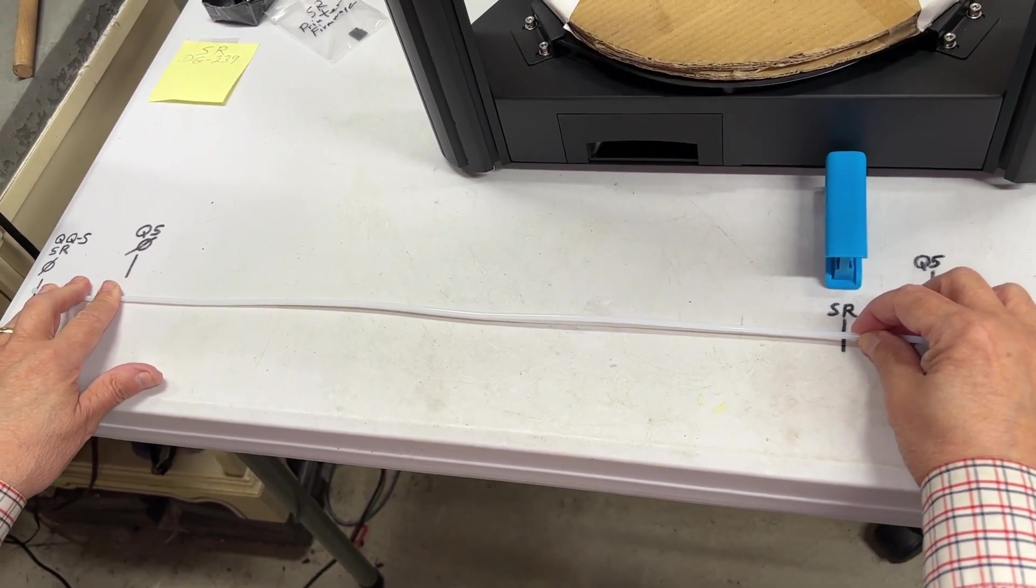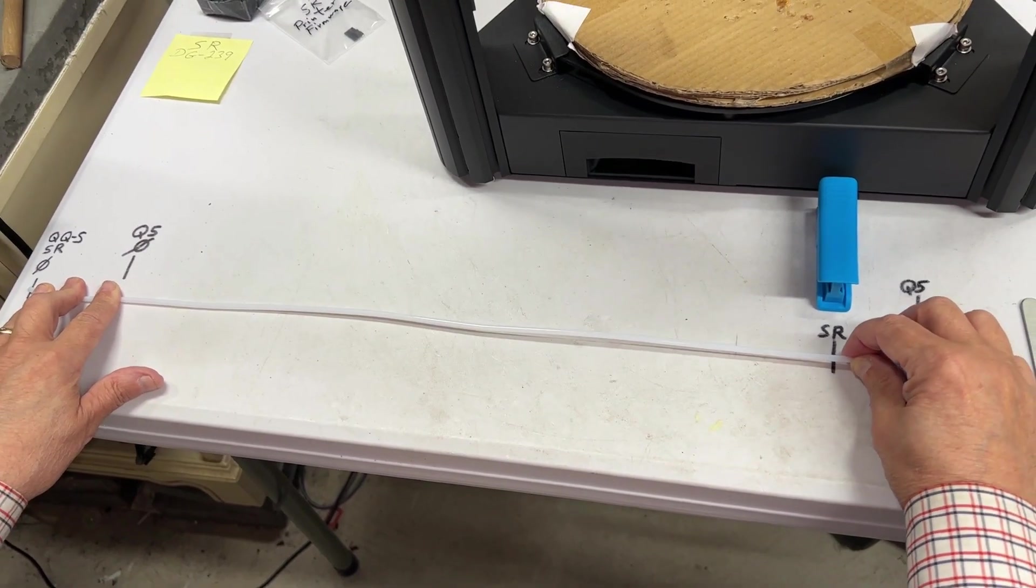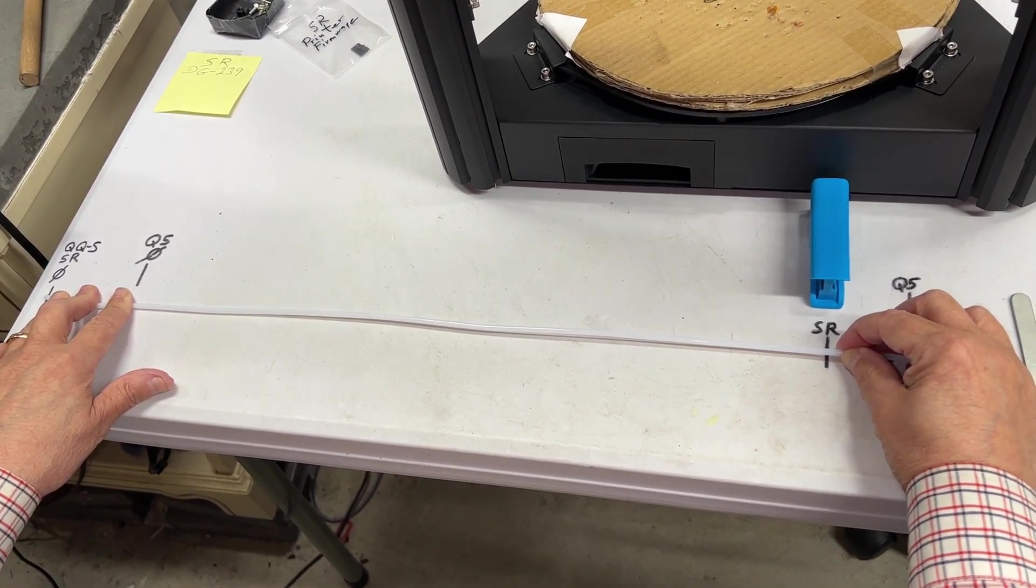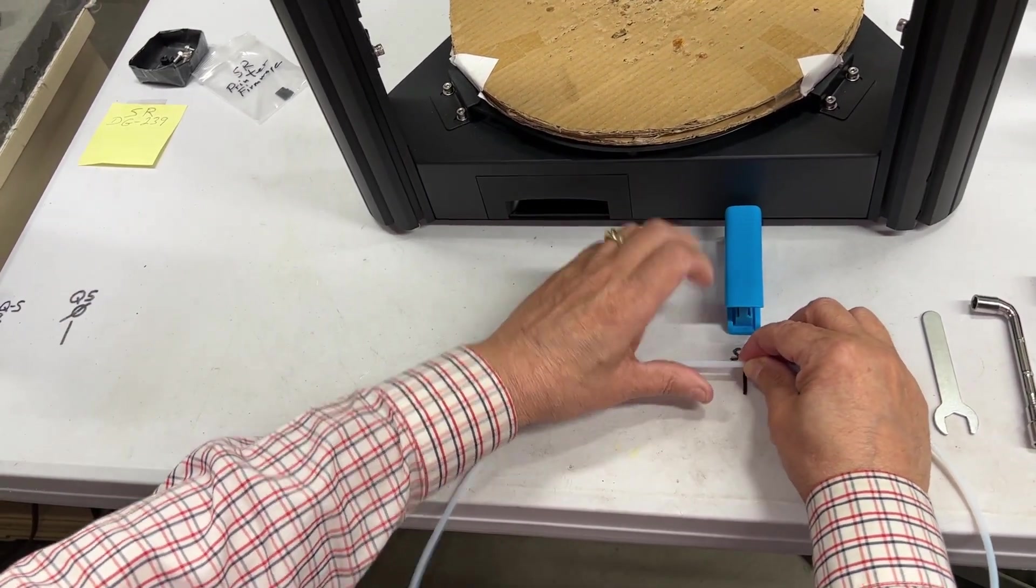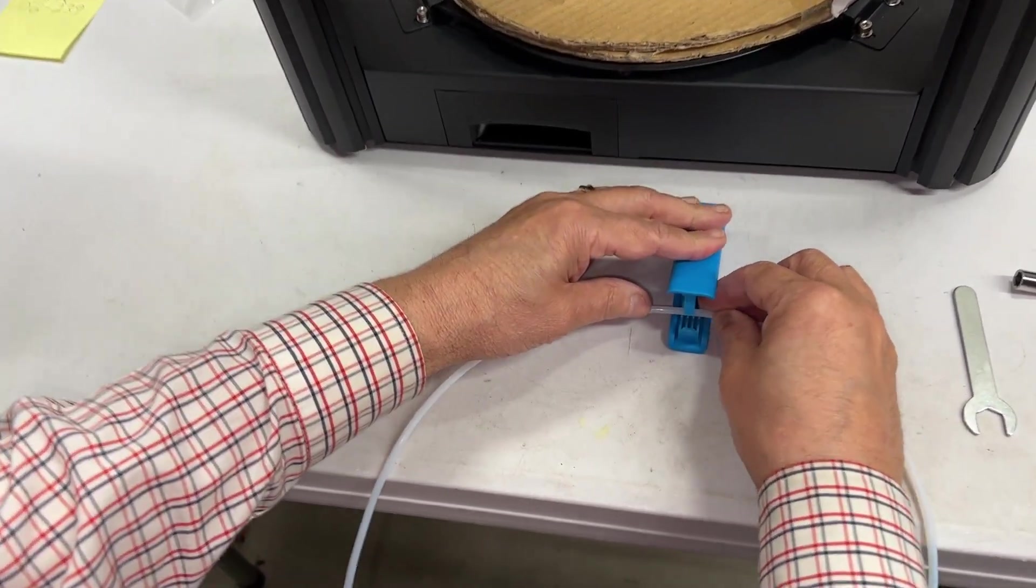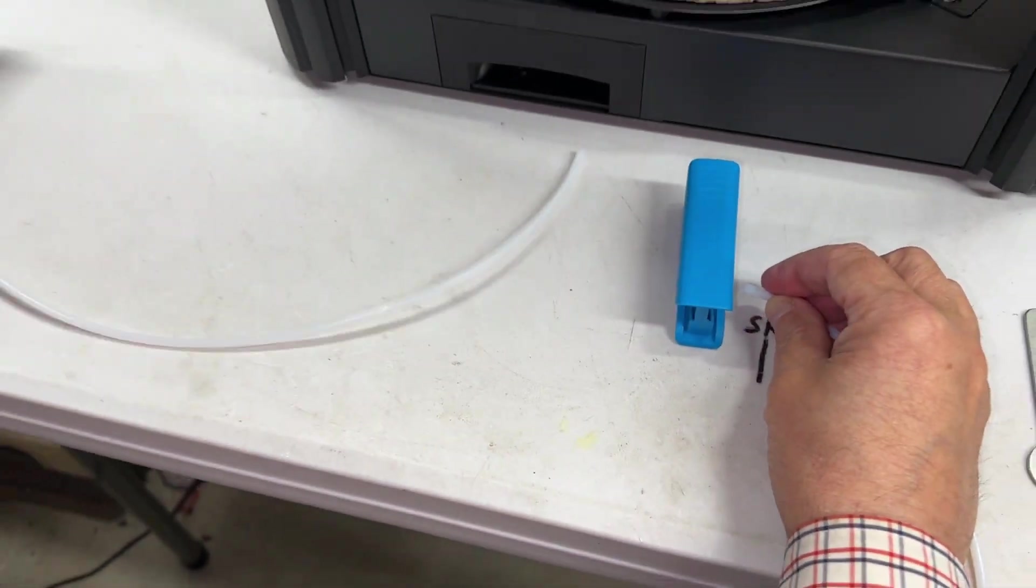All right, so you can see that I have it marked on my table, the length of the PTFE tubing. That'll be the first thing we do is cut a new piece of that. There's our piece of tubing.